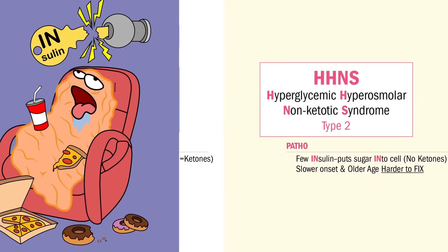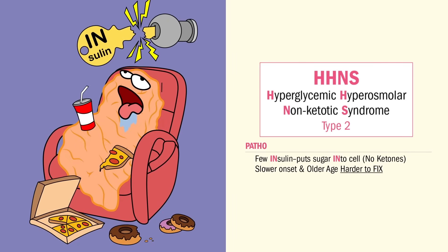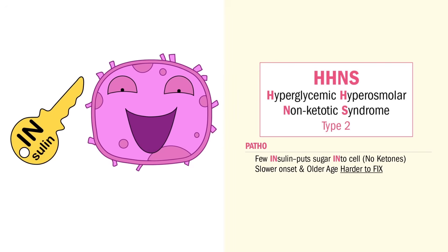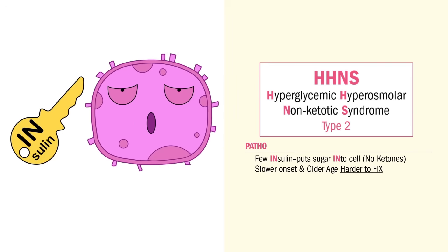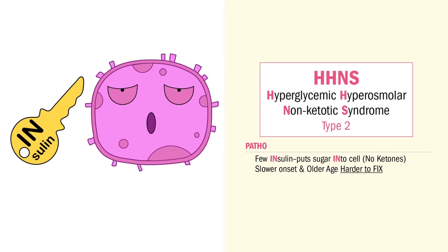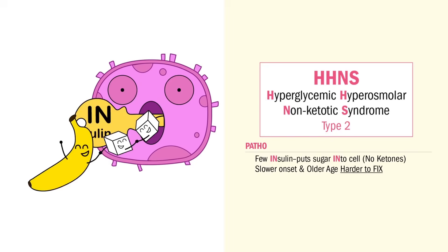Now type 2 — we have a few insulins, barely working. So HHNS, or just HHS — let the name help you. Hyperglycemic: we have higher sugar. Hyperosmolar: we have very thick, dehydrated blood — huge dehydration. And non-ketonic: we have no ketones. S is for syndrome. Since the body has barely enough insulin to put sugar into the cell, the body burns sugar for fuel, so we don't get those ketone bodies.